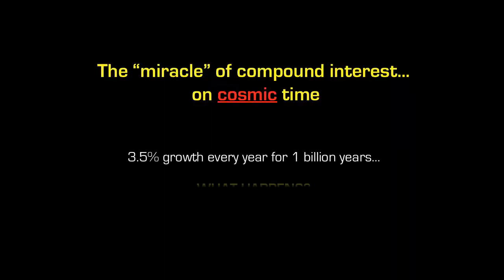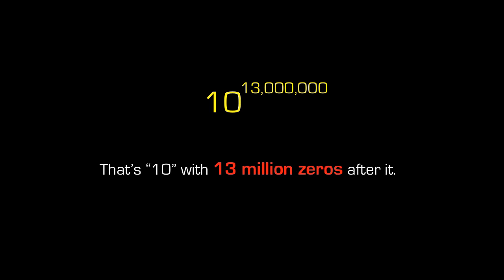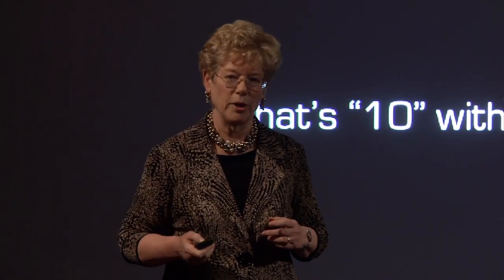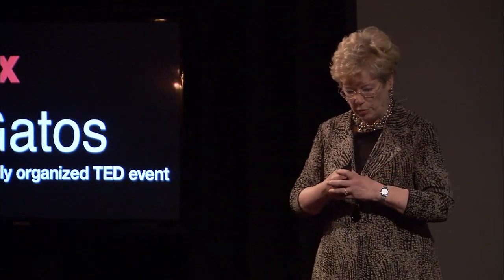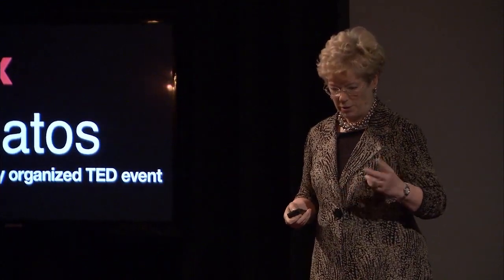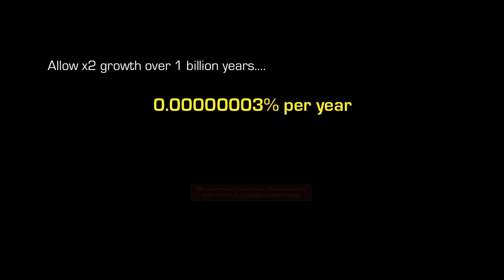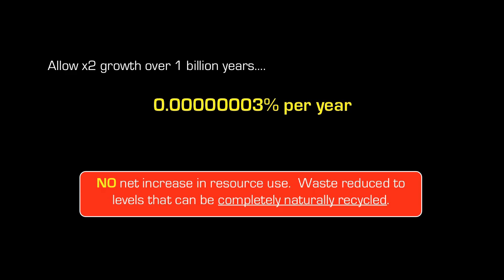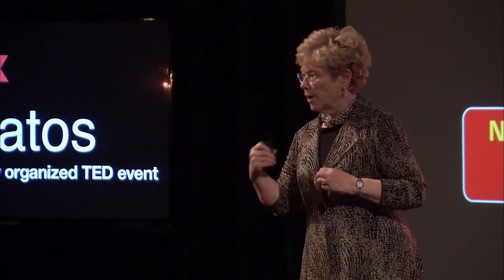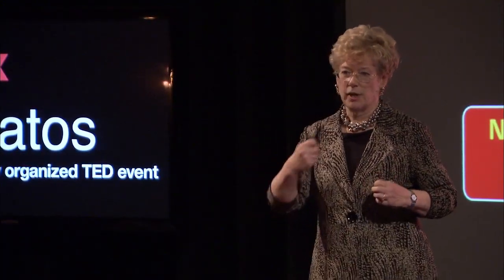What does the miracle of compound interest look like on cosmic time? 3.5% growth every year for a billion years? That's 10 with 13 million zeros after it — we don't even have a name for that number. Let's invert this: what is sustainable growth on cosmic time? If we allow ourselves a growth of a factor of two over a billion years, the annual growth rate is so small it's effectively zero. So the cosmologist is saying that to be a cosmically successful species, we have to adopt essentially zero growth — zero net consumption of resources and perfect recycling.